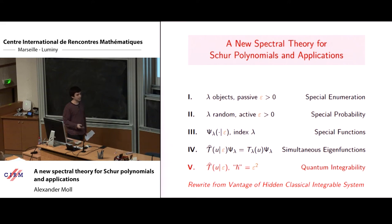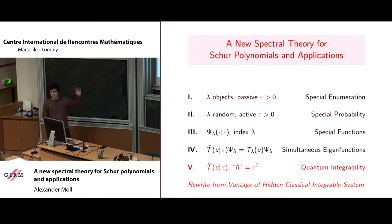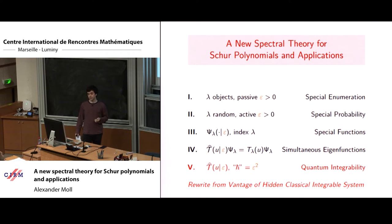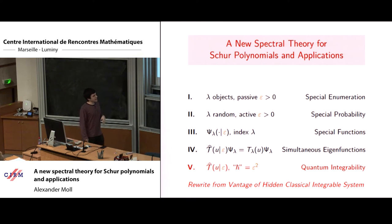Certain measures are really special — you might be able to compute moments exactly, get some exact formulas, or determine exact asymptotics. A third level of sophistication would be to say that there's actually some special function theory going on. Those objects lambda index some really special functions. Why are special functions special? Another approach is through representation theory: the reason those special functions are special is that they're simultaneous eigenfunctions of some large family of commuting operators.